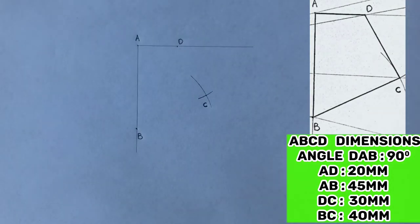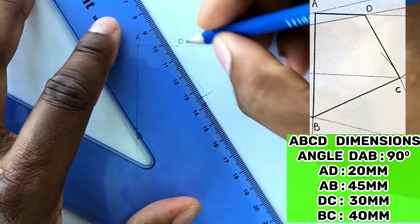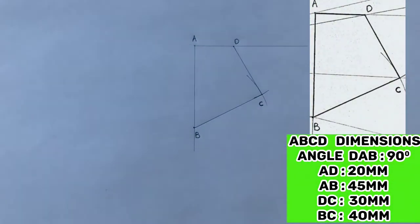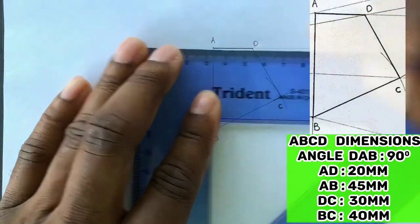Now draw a line from point C to D and from point C to A. Now outline your given quadrilateral A, B, C, D.